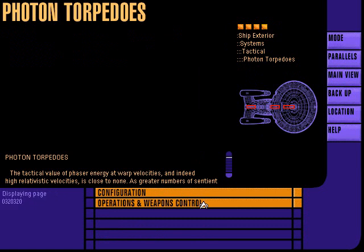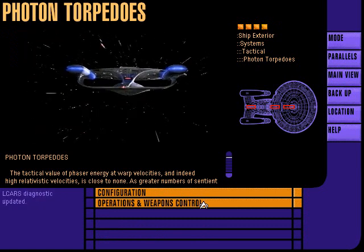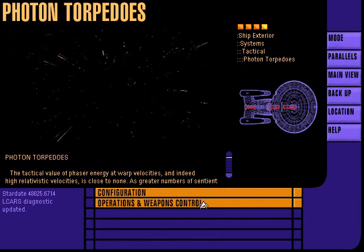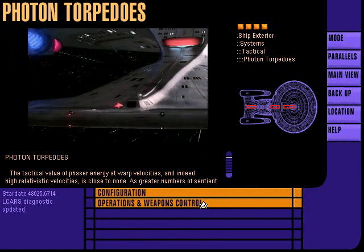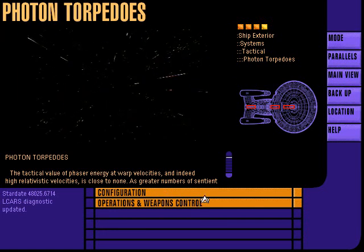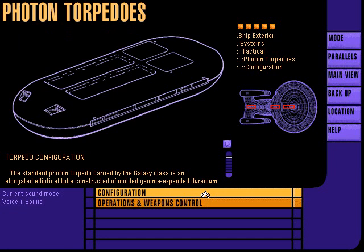Photon torpedoes are Starfleet's primary warp-capable defensive weapons system. Standard photon torpedo configuration includes deuterium and anti-deuterium holding tanks, central combiner tank, magnetic suspension components, target acquisition, guidance and detonation assemblies, and a warp sustainer engine.